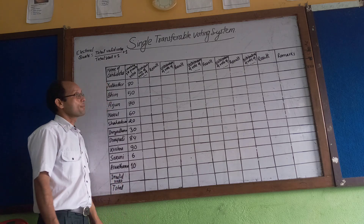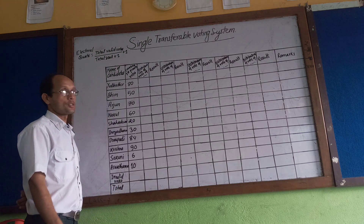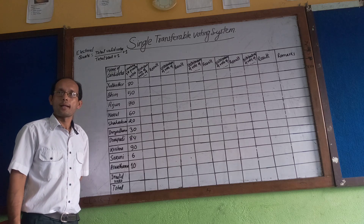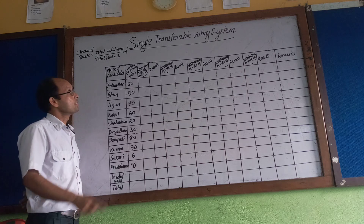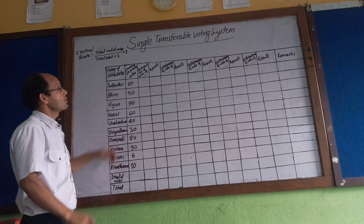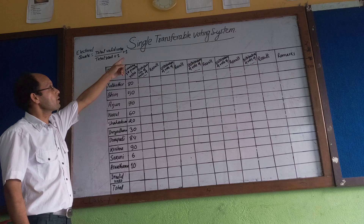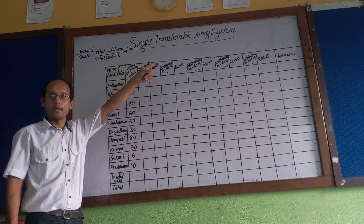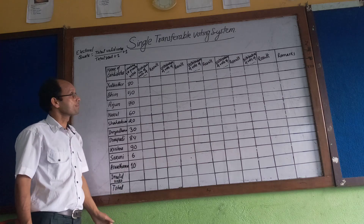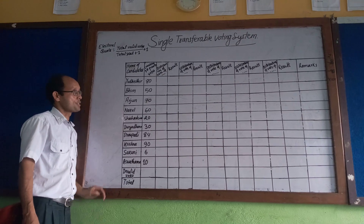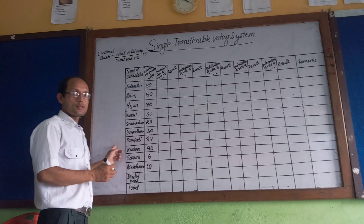There are basically two types of voting systems. One is FPTP, which is a direct voting system. The next one is the proportional voting system. Among them, the proportional voting system has one type called the Single Transferable Voting system. I will discuss the other type in another video.